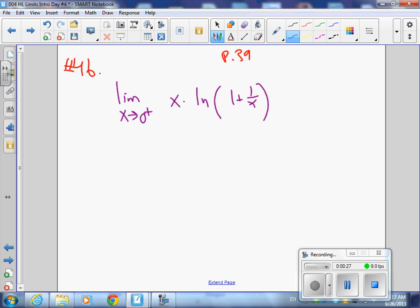This one's kind of nasty, but what you want to do is start off by putting a 0 in for x. So I'm going to get 0, and then what's 1 over 0 close to? Infinity. So this is essentially the natural log of 1 plus infinity. What is the natural log of infinity? Infinity. Is 0 times infinity an indeterminate form? So you have to write 0 times infinity, and then you write indeterminate form.